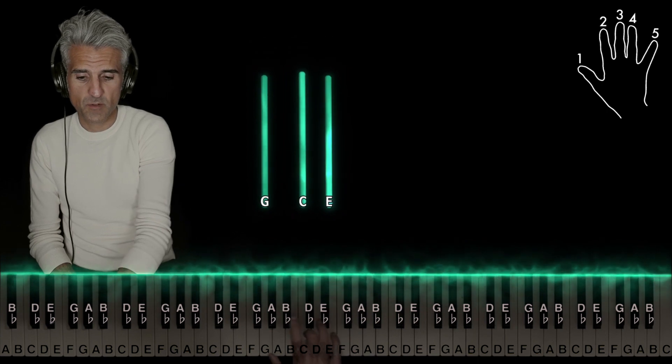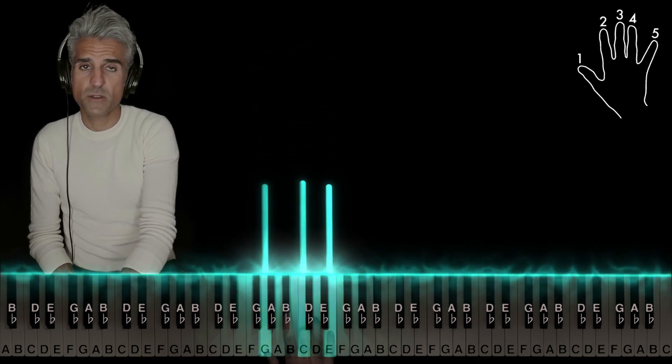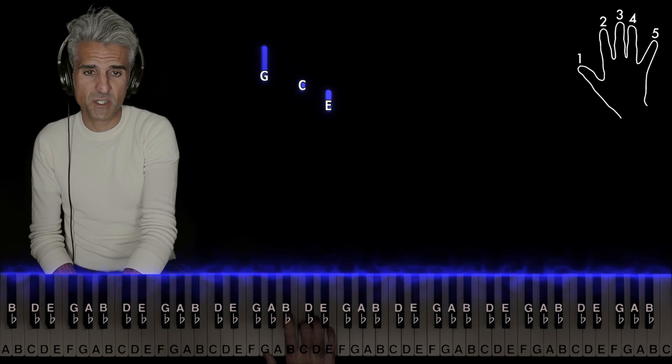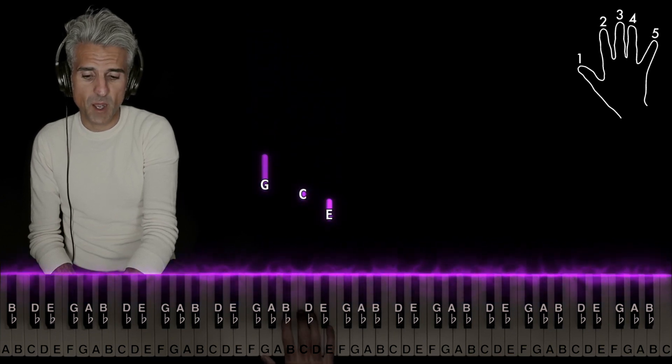Keep that shape. Move it down. Using five, three, one again. This is a C major chord second inversion. Play it from top to bottom.